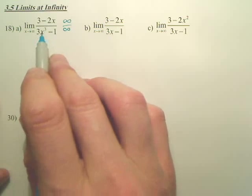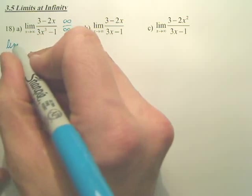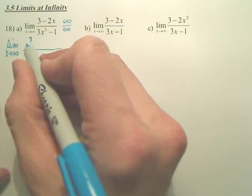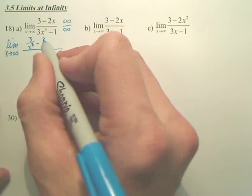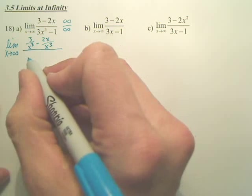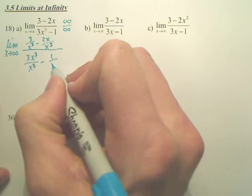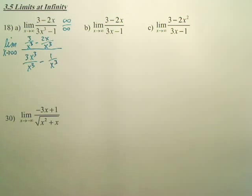So what is it? x cubed. The limit as x approaches infinity: you divide everything by x cubed. Why can we do that? Basically, we're multiplying top and bottom by the same thing — you're multiplying by a fraction. You can always multiply top and bottom by the same thing, and that's what we just did.